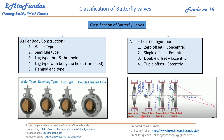That's why we call it a single offset eccentric valve. For double offset, we offset along this line and also offset from this point, so the disc does not touch the body at center — we have two offsets. For triple offset, the first and second offsets are the same as double offset, and the third offset is in the seating arrangement, where the seat is at an angle, causing the third offset.